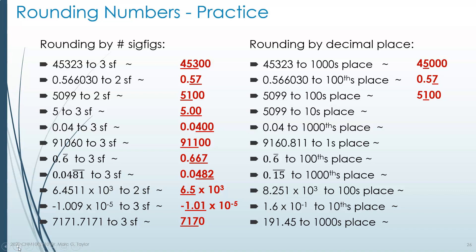5,099 to the tens place: we look at the 9 in the tens place and decide what to do with it by looking at the next 9. The next 9 tells us to round the first 9 up — but 9 becomes 10, so the 1 carries into the hundreds place, a 0 goes into the tens place, and the ones place is filled with a placeholder 0. It rounds to 5,100 again. Counting by tens, 5,099 is closer to 5,100 than to 5,090, so we get the same answer.